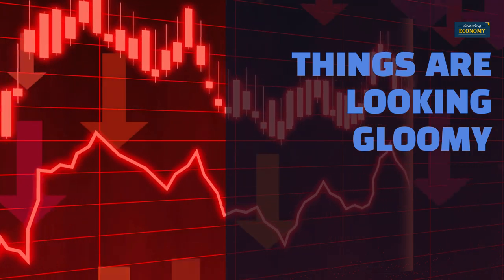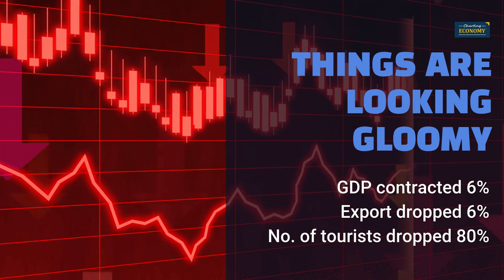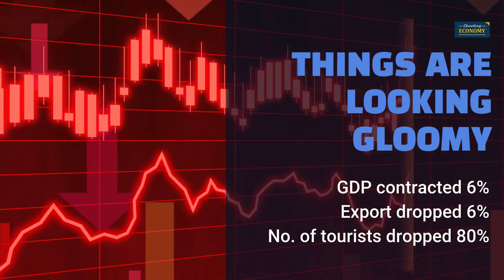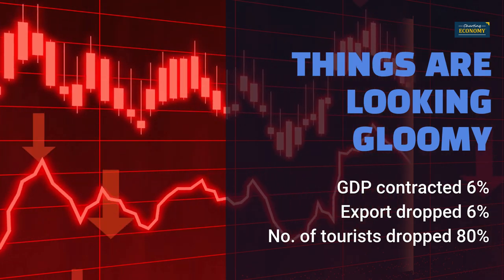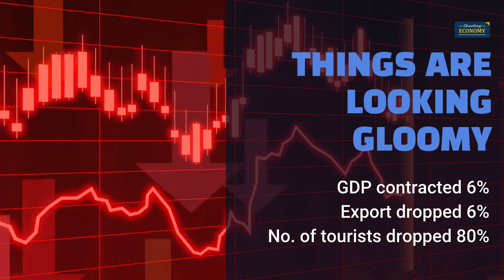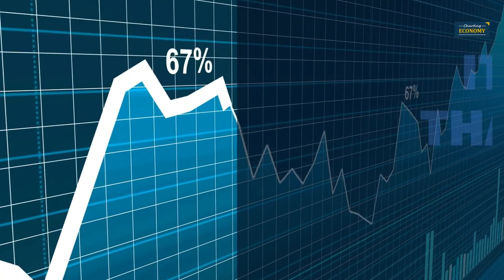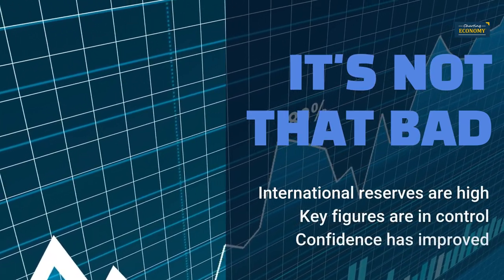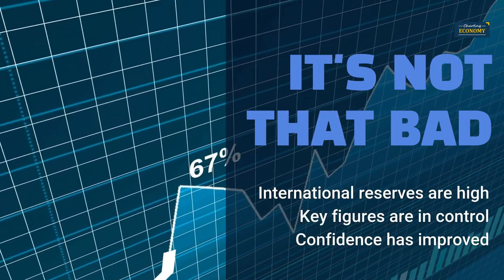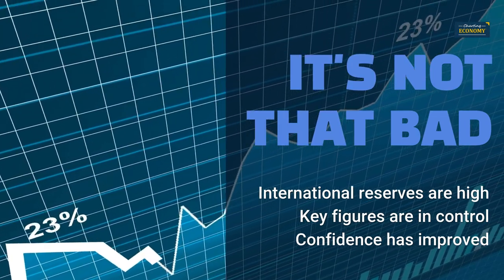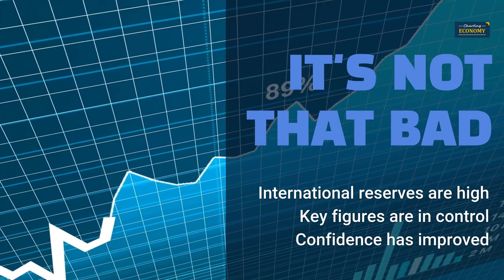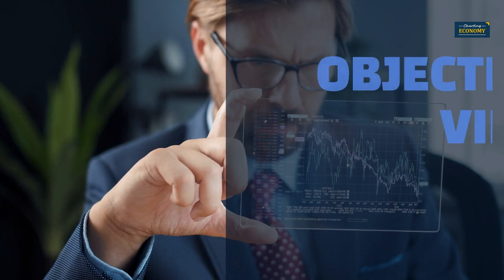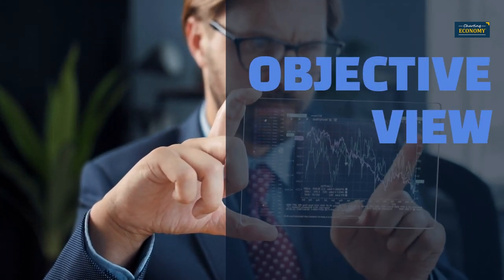The economy is poorly affected by the COVID crisis. It contracted more than 6% last year. Exports dropped by 6%, and the number of tourists dropped more than 80%. Things are looking gloomy. On the other hand, the economy contracted less than others amid the COVID crisis. International reserves are still high. Public debt, unemployment, and inflation are in control. Consumer confidence has improved from the lowest point. Things are not that bad. Would you believe that it's the same economy? And both statements are fact-based.